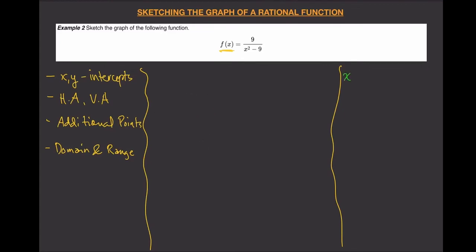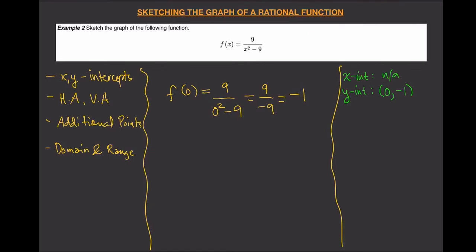So the x-intercept is N/A. For the y-intercept, we equate x equals zero. So f(0) equals nine over zero squared minus nine, which gives us nine divided by negative nine, which equals negative one. So the y-intercept is the point (0, -1).